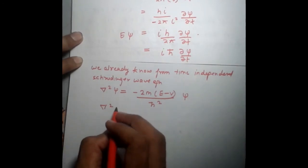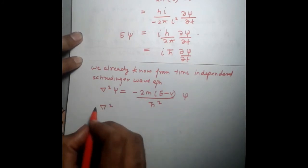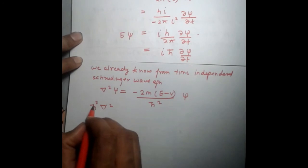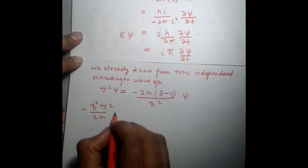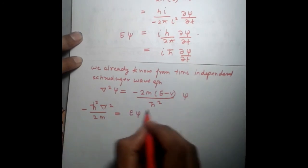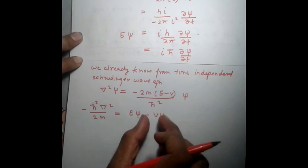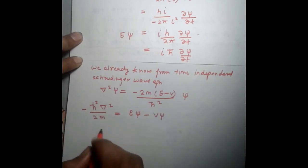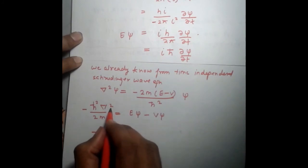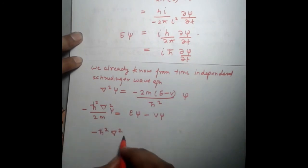Now, shift these quantities. -ℏ²∇²/(2m) over here. Shift this quantity on the left, -ℏ²∇²/(2m), sorry I forgot the ψ over here. -ℏ²∇²/(2m) ψ plus Vψ is equal to Eψ.